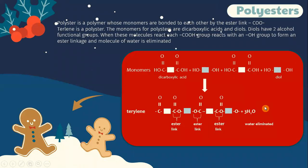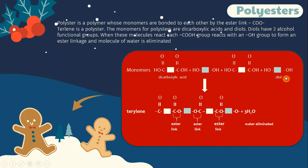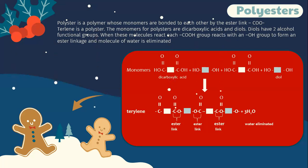Let's look into polyester. Polyester is a polymer whose monomers are bonded to each other by ester linkages, COO. An example of a polyester is Terylene. The monomers for polyester are dicarboxylic acid and a diol — a diol has two alcohol functional groups. The COOH group reacts with an OH group to form an ester linkage and a molecule of water is eliminated. The equation below shows the polymerization of Terylene.